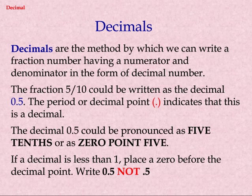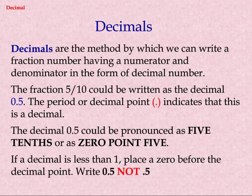Decimals are the method by which we can write a fraction number having a numerator and denominator in the form of a decimal number. The fraction 5/10 could be written as the decimal 0.5. The period or decimal point indicates that this is a decimal. The decimal 0.5 could be pronounced as 'five tenths' or as 'zero point five'.